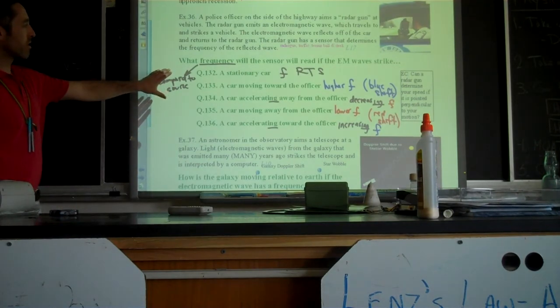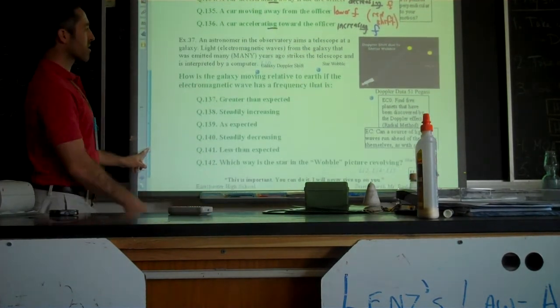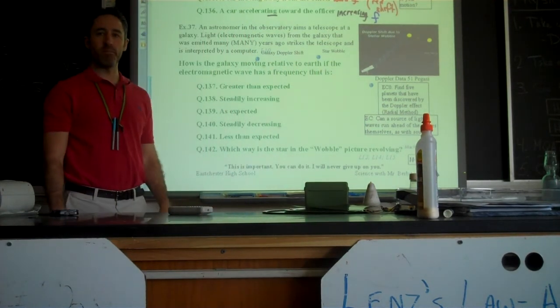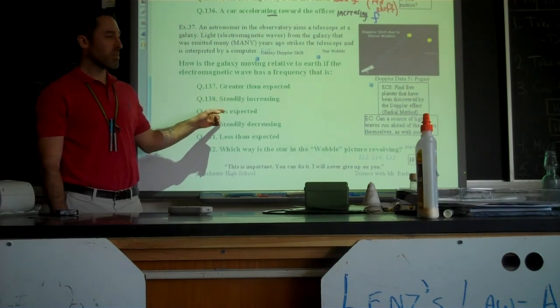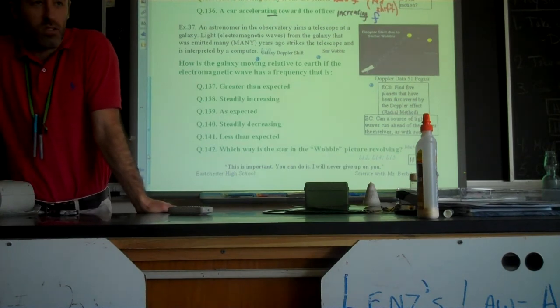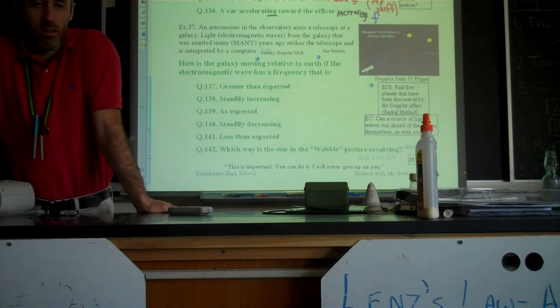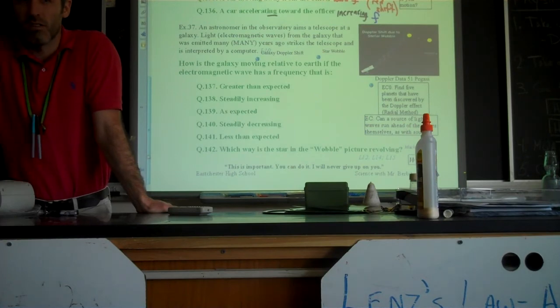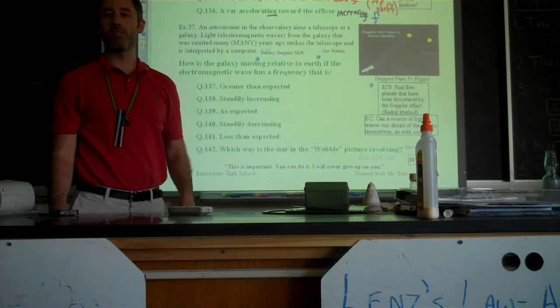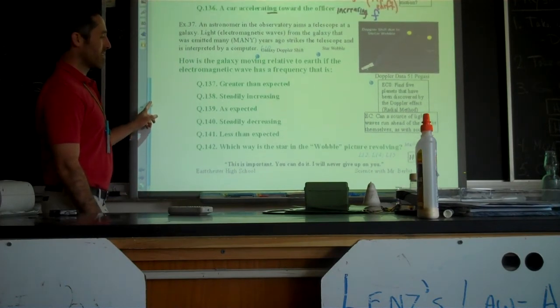Now you notice what we did up here, is we said, here's the motion, what happens to the frequency. The other way you can ask this is like this example, which is, here's the frequency, what sort of motion does that imply? This, of course, is the way to use this. Here's a cool example. Have you guys heard of extrasolar planets, planets around other stars than our own? Yeah. There have been over a thousand discovered at the moment, and the expectation is that there are billions upon billions. The expectation is our solar system is not unique that way, that there'll be planets all over the place.